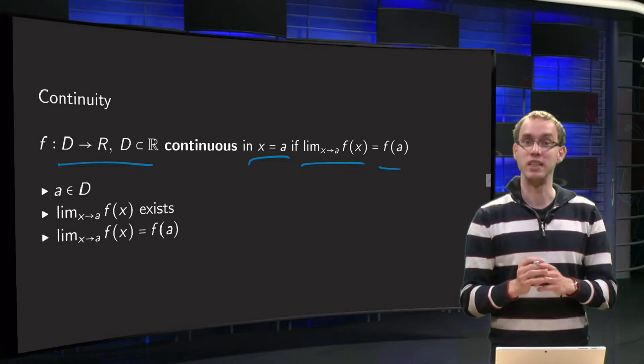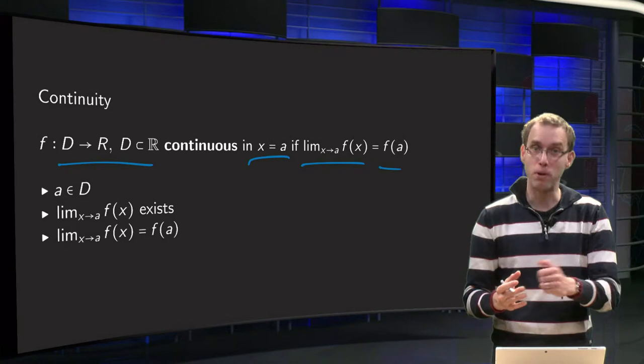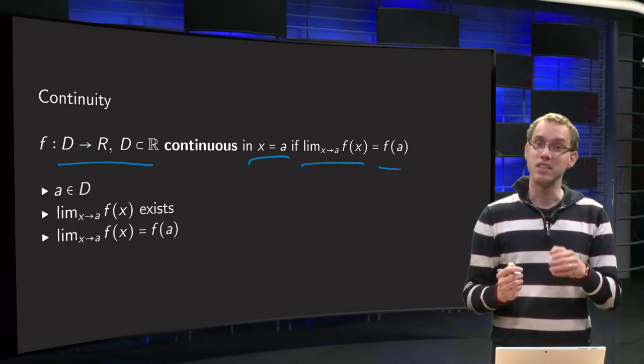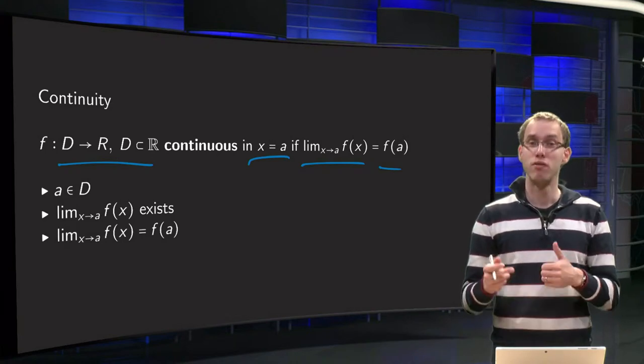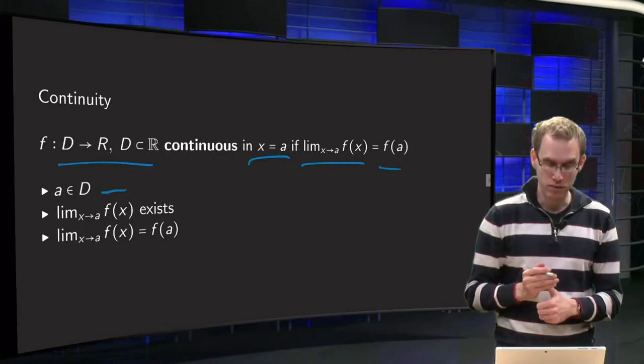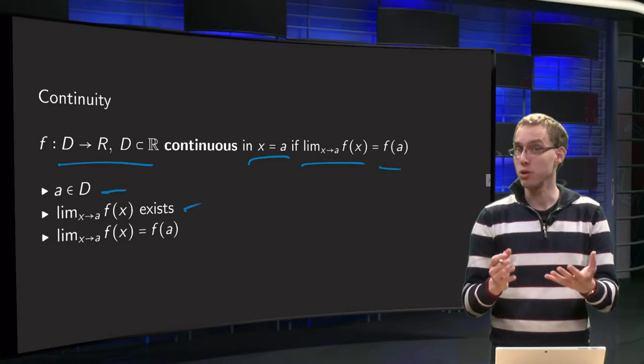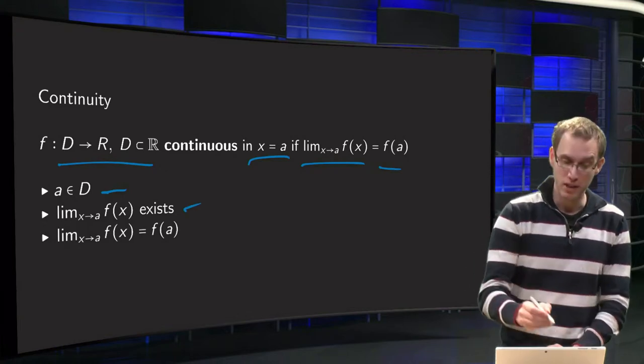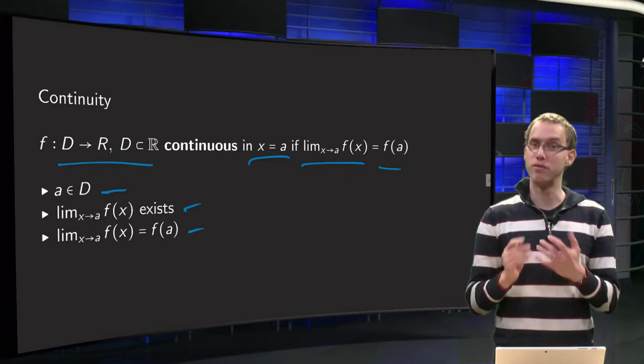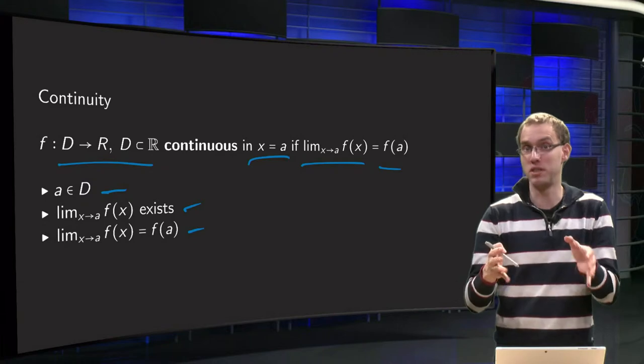Well, this statement actually says three things. First of all, a has to be in D. Second of all, the limit lim(x→a) f(x) has to exist. And third of all, this limit has to equal the function value f(a). So in fact this one statement contains three statements.